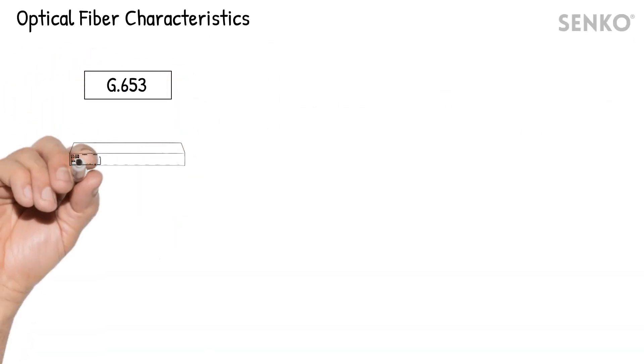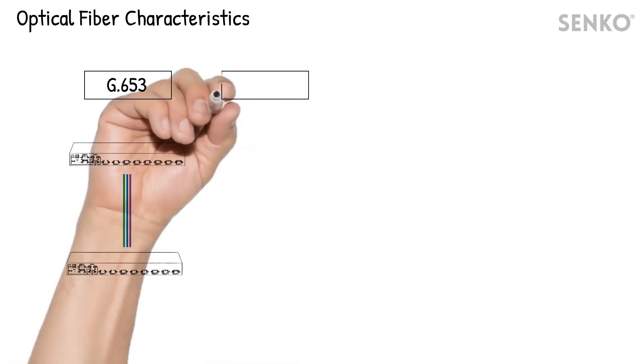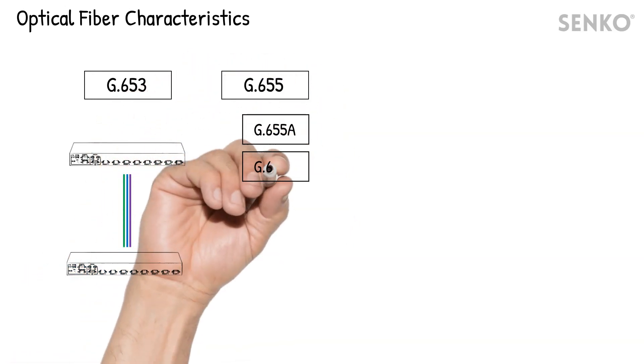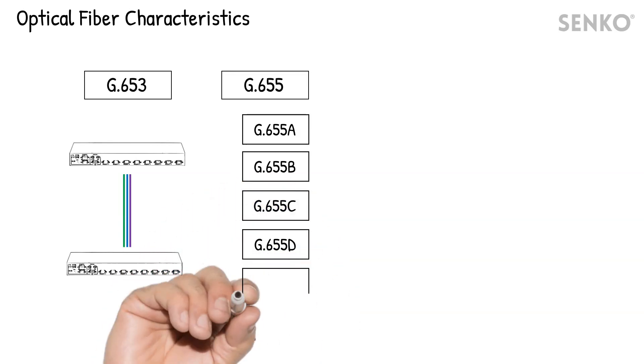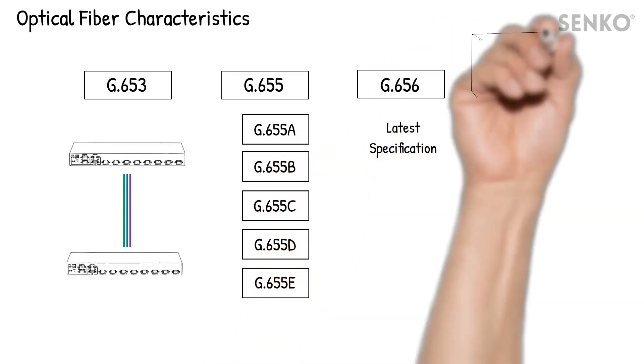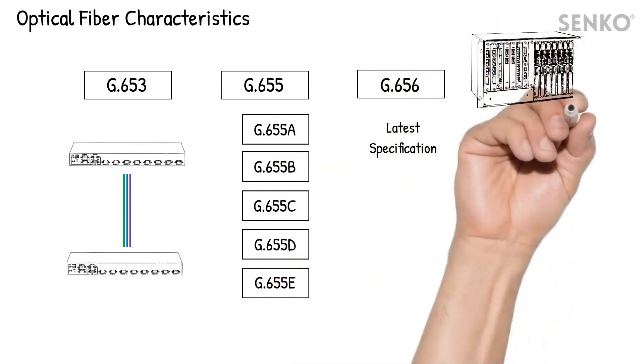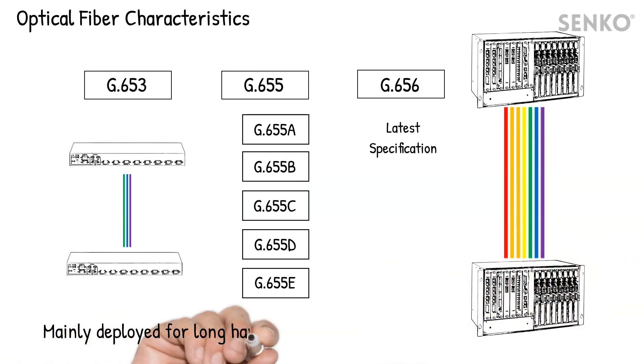G.653, G.655, and G.656 outline the characteristics of a dispersion-shifted single-mode fiber that is designed to reduce optical dispersion for long-haul transmission. The latest specification has been developed to support high-bandwidth WDM transmission over hundreds of kilometers.